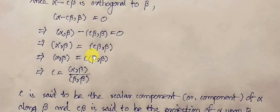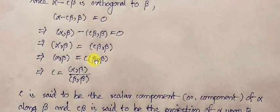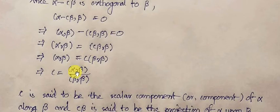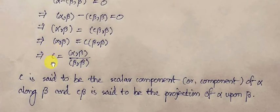From the homogeneity property of the inner product function, we can write the scalar C outside the parenthesis, so C*(beta, beta). From the positivity property, for any non-null vector beta, the inner product (beta, beta) is a positive real number, so we can divide both sides by it. Therefore, C = (alpha, beta) / (beta, beta).